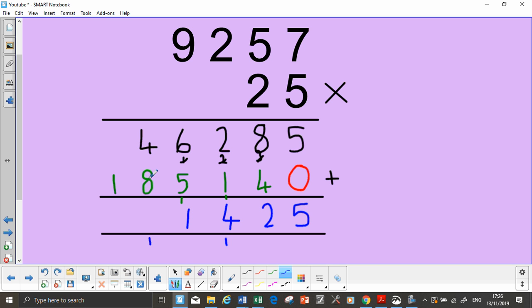4 add 8 is 12, add my 1 is 13. And then you've got nothing there. So nothing add 1 is 1, add your 1 is 2. So 9,257 times 25 is 231,425.